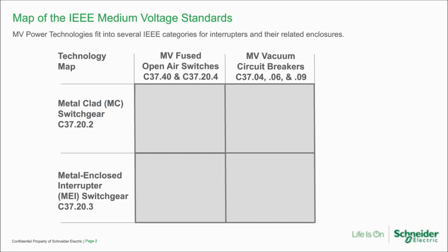Here's a map of the IEEE world of medium voltage switchgear. Medium voltage power technologies fit nicely into several categories — some for interrupters and some for their enclosures. Until the 1990s, this worked out pretty well; then the lines began to blur. Reading down the left side of the map, you see the enclosures: on the top is metal clad (MC) switchgear defined by C37.20.2, and on the bottom left is metal enclosed interrupter switchgear (MEI) defined by C37.20.3. Reading across the columns, C37.40 is for power fuses and C37.20.4 is for switches — 1 kV to 38 kV used in metal enclosed switchgear.